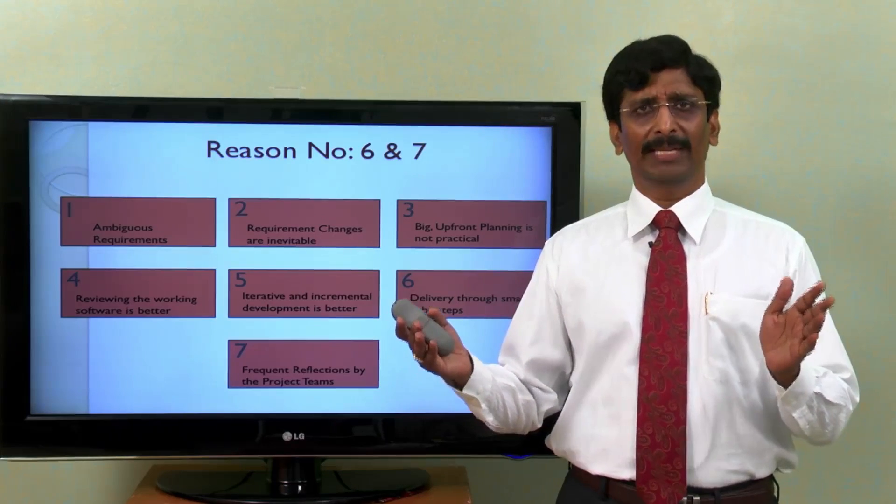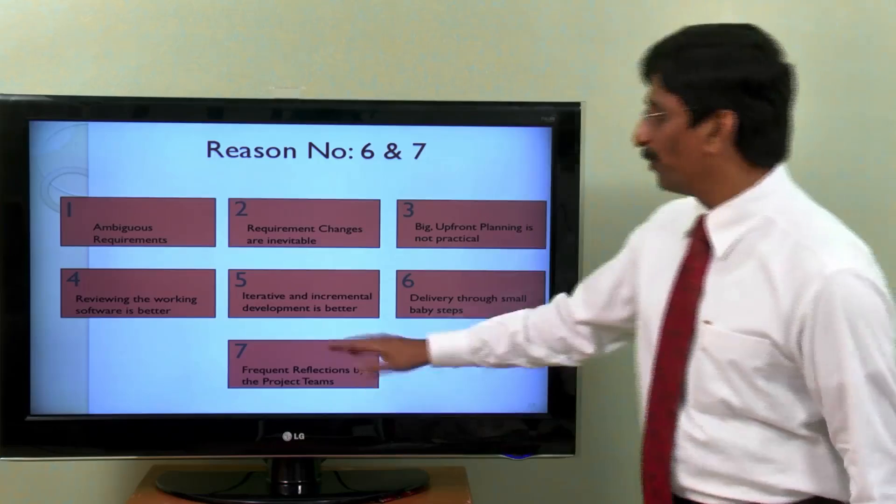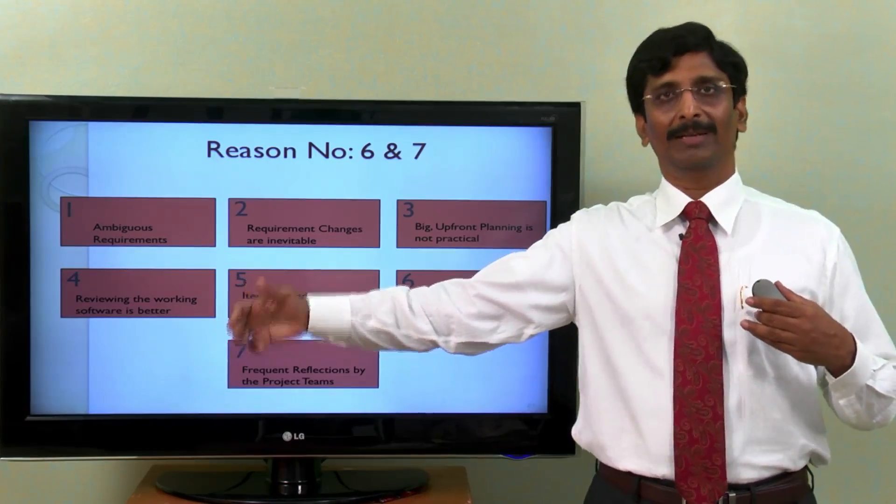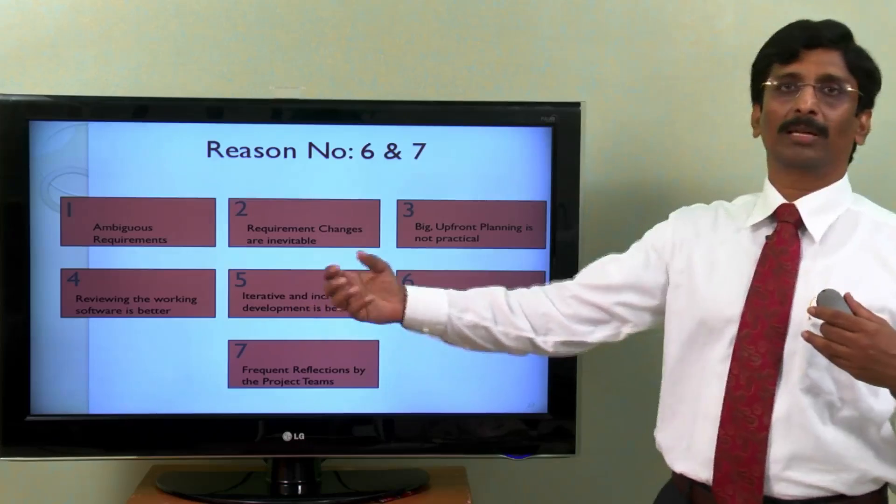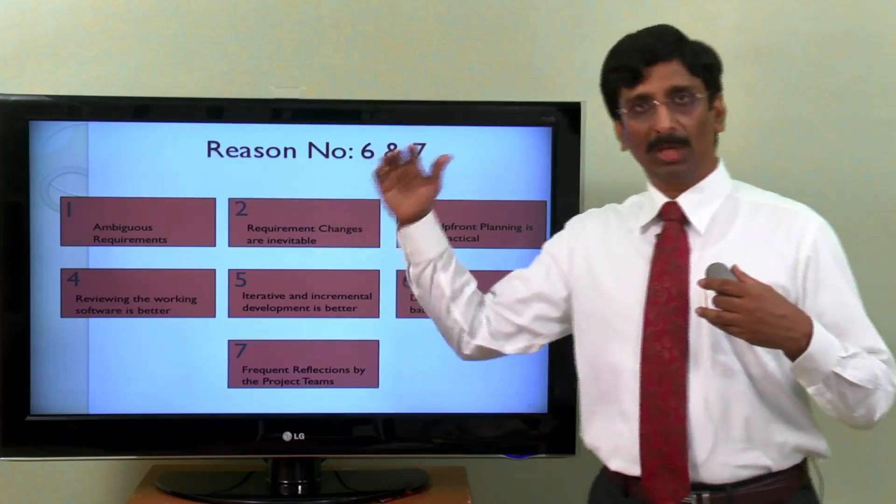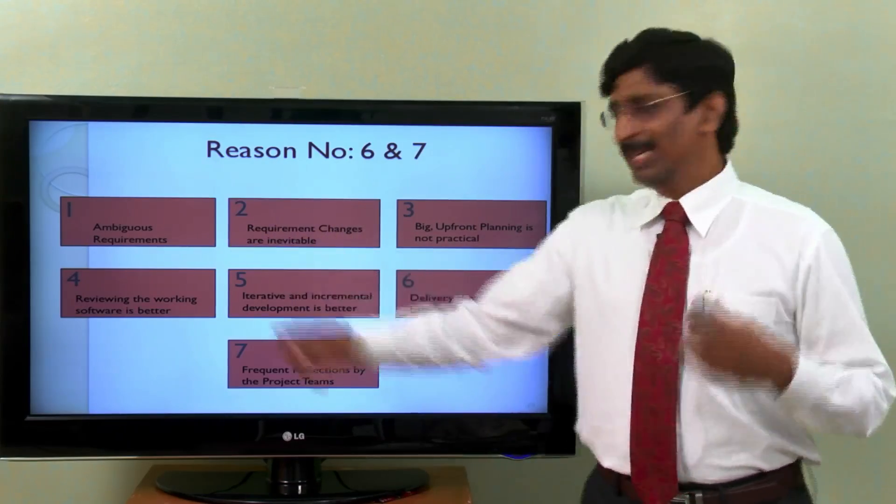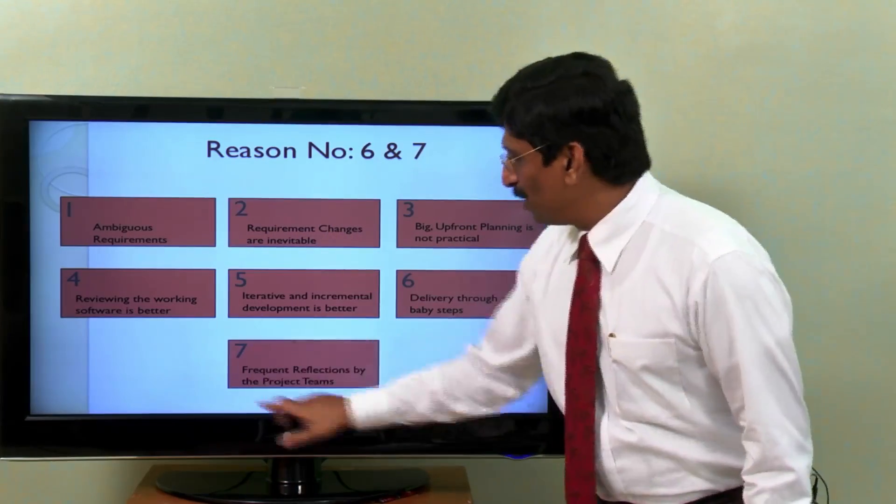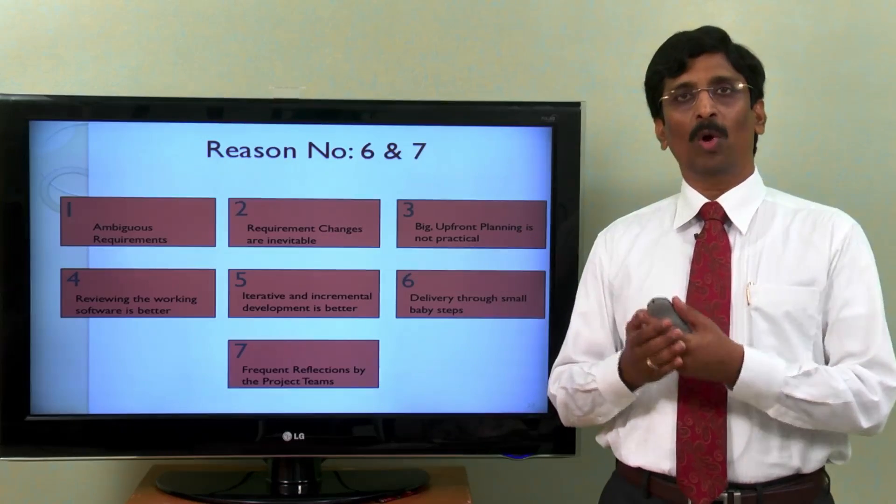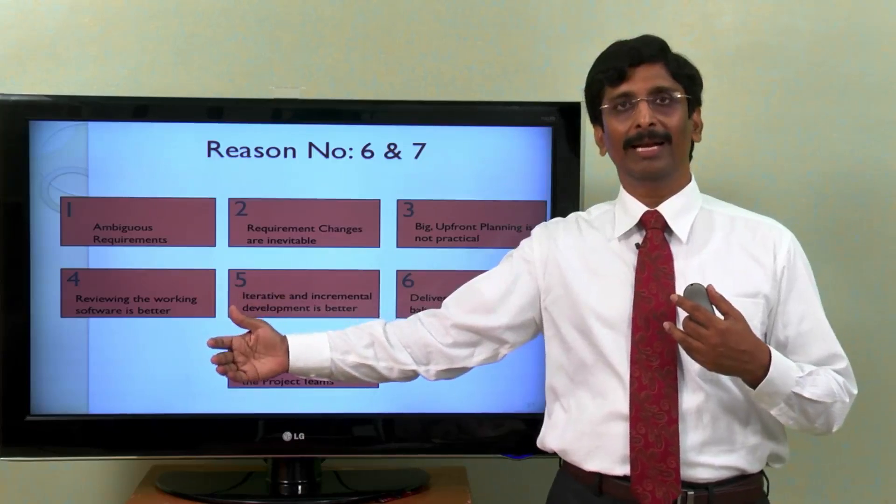What do we do right now in the traditional software development life cycle? We do some reflections that is mostly by the end of the development life cycle. End of the project, you do a project retrospection meeting, or some projects call this as a project closure meeting or in some other name. So that is too late. Even if you learn a lot of new things or if you want to change a lot of things, it is already too late. It is already end of the project.